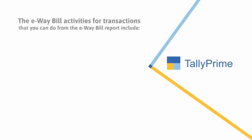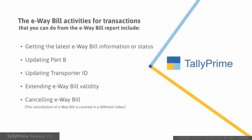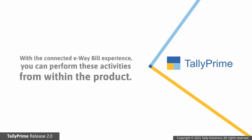These activities include getting the latest e-way bill information or status in the transaction, updating Part B and transporter details, and extending e-way bill validity. Tally Prime Release 2.0 onwards, you have a connected e-way bill experience and can perform these activities using the e-way bill report in Tally Prime.